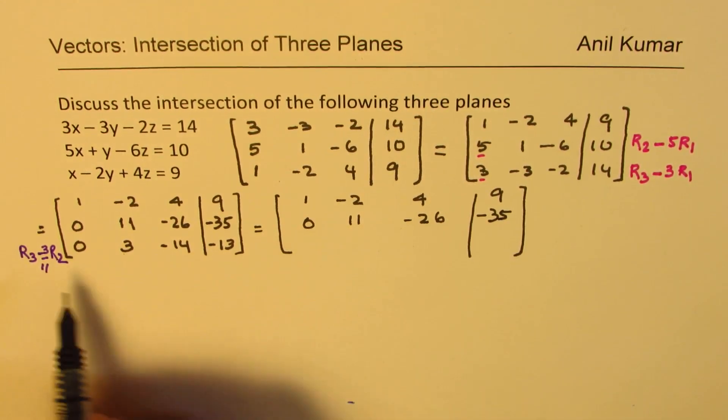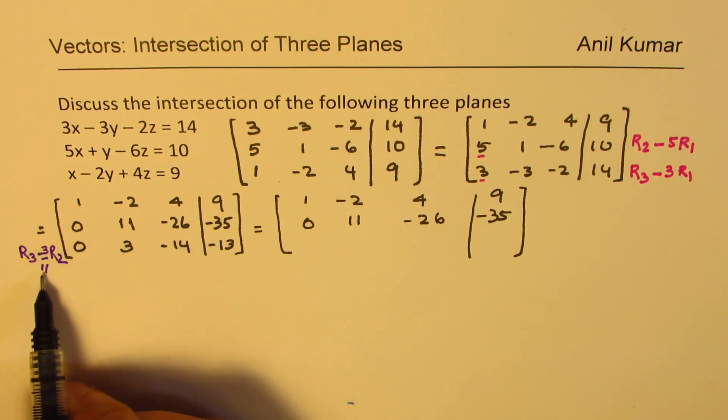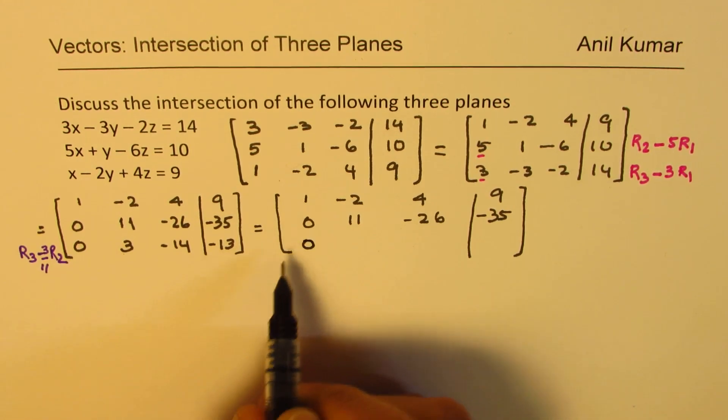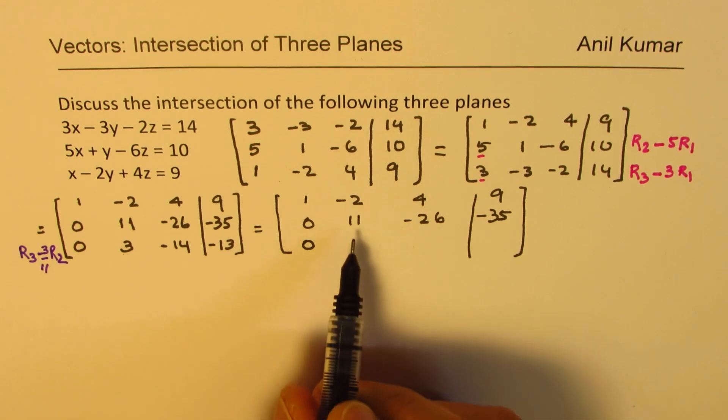Now, in the third row, we are multiplying the second row by 3 over 11 and then taking away from this. While this is 0, doing any operations with 0, take away 0 is not a problem. So here, if I multiply 11 by 3 and then divide by 11, I do get 3 here.